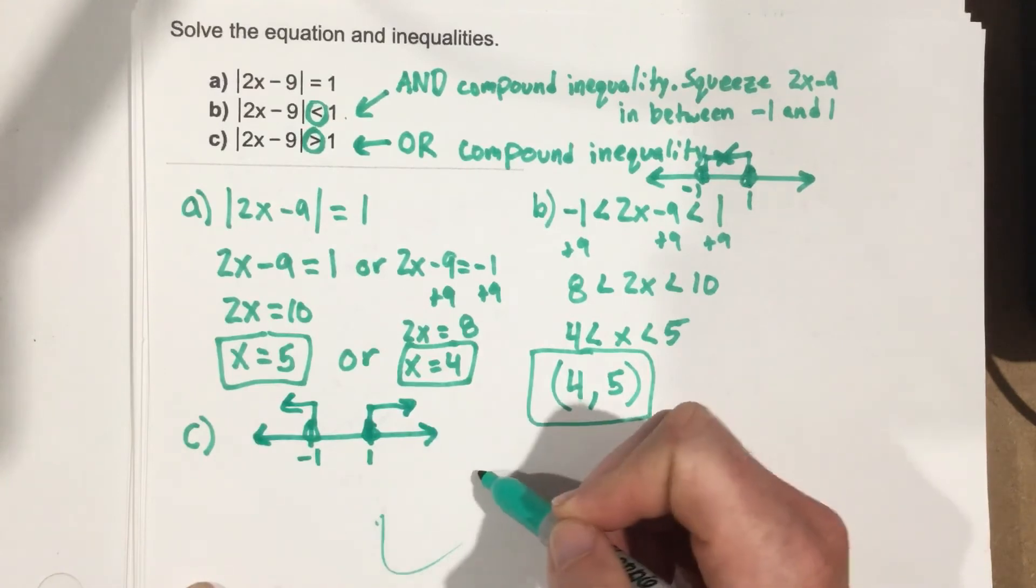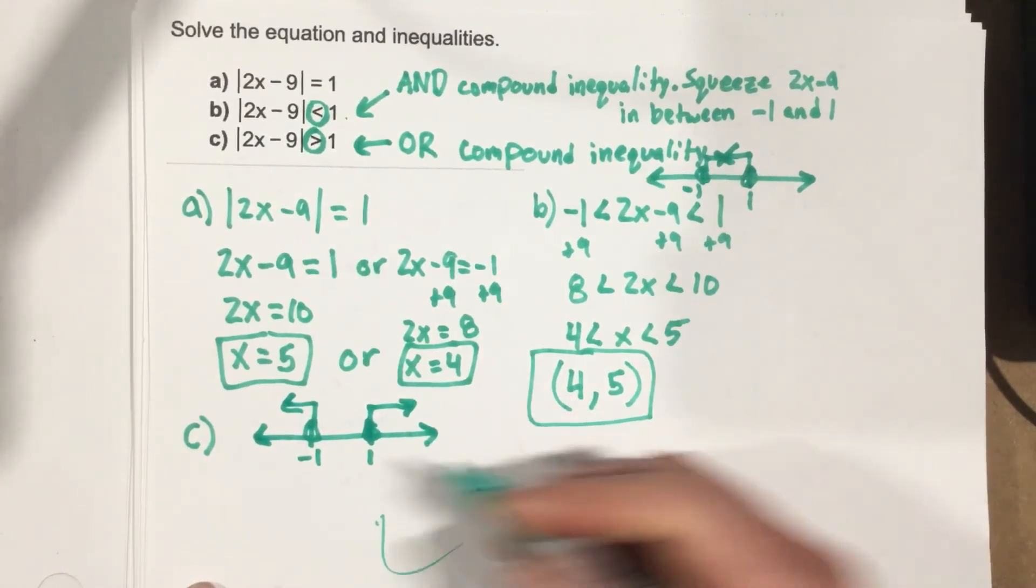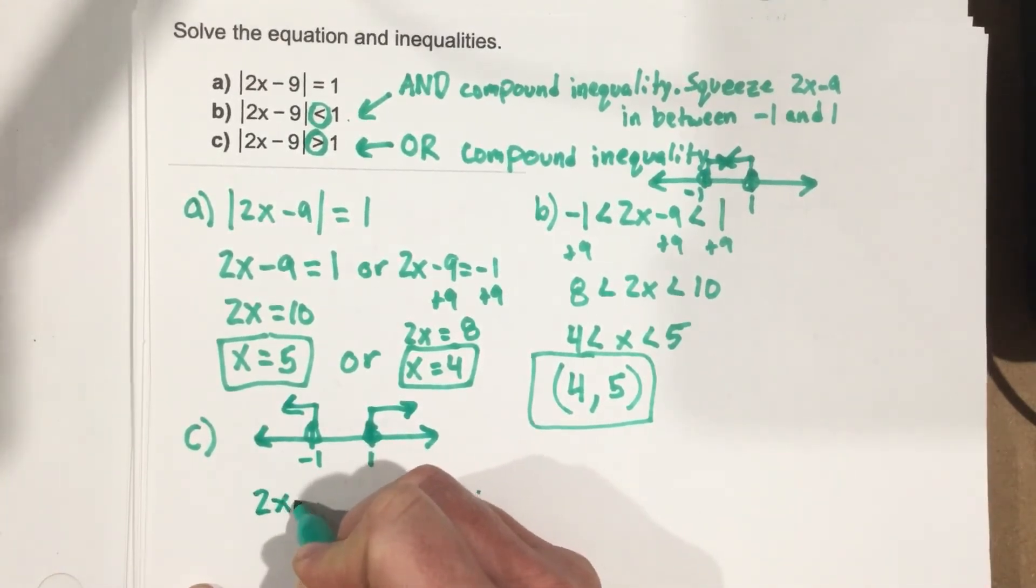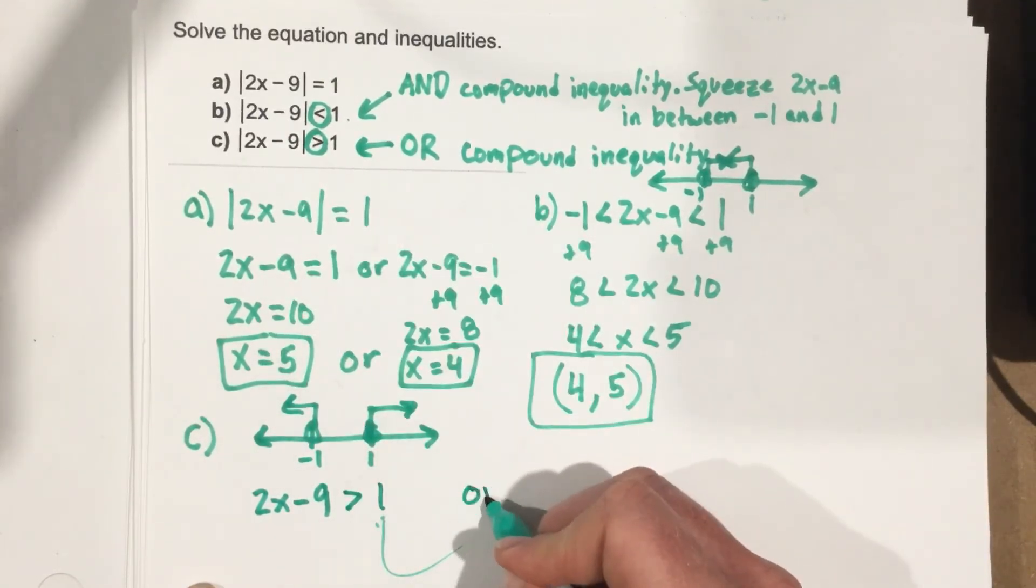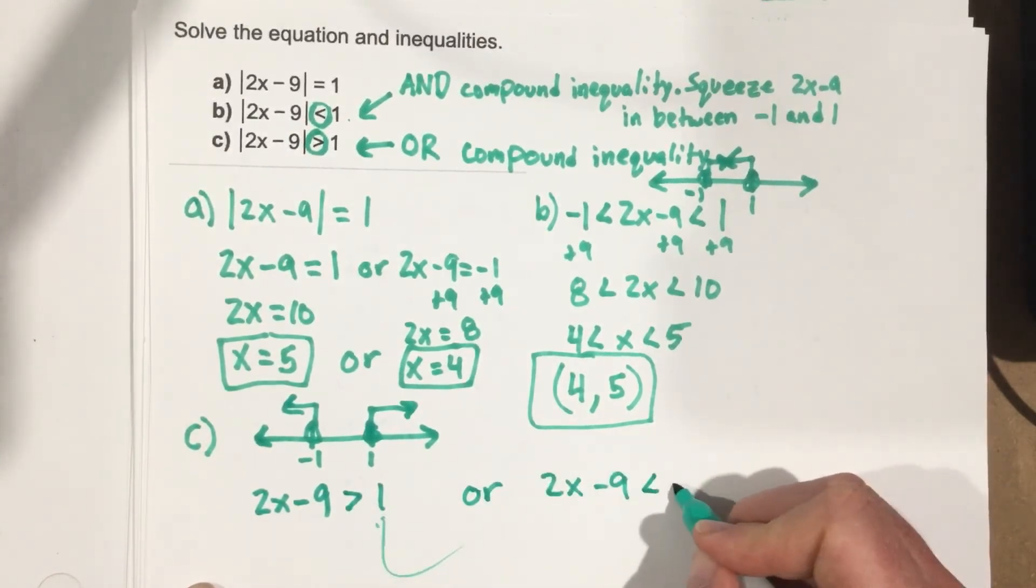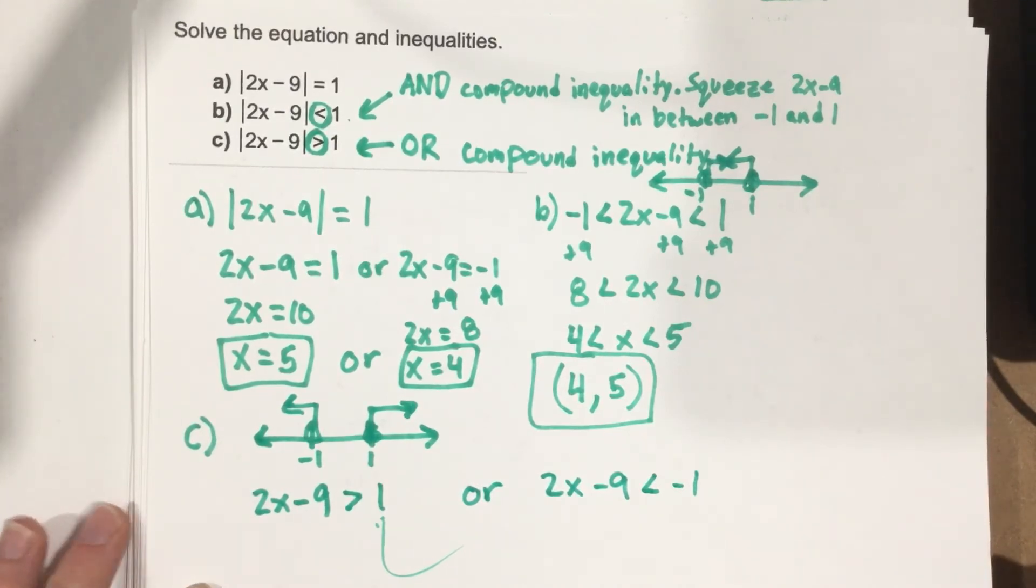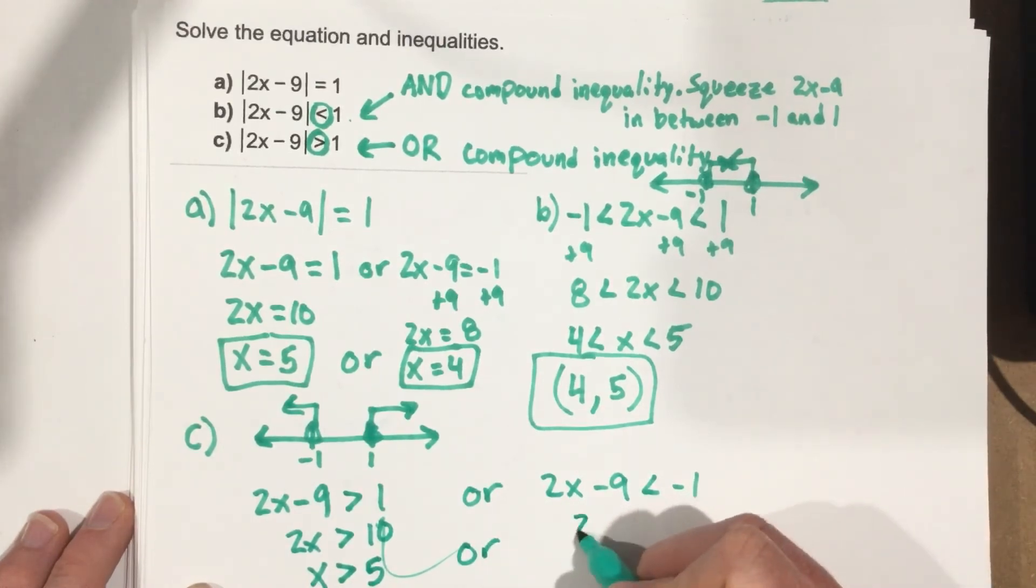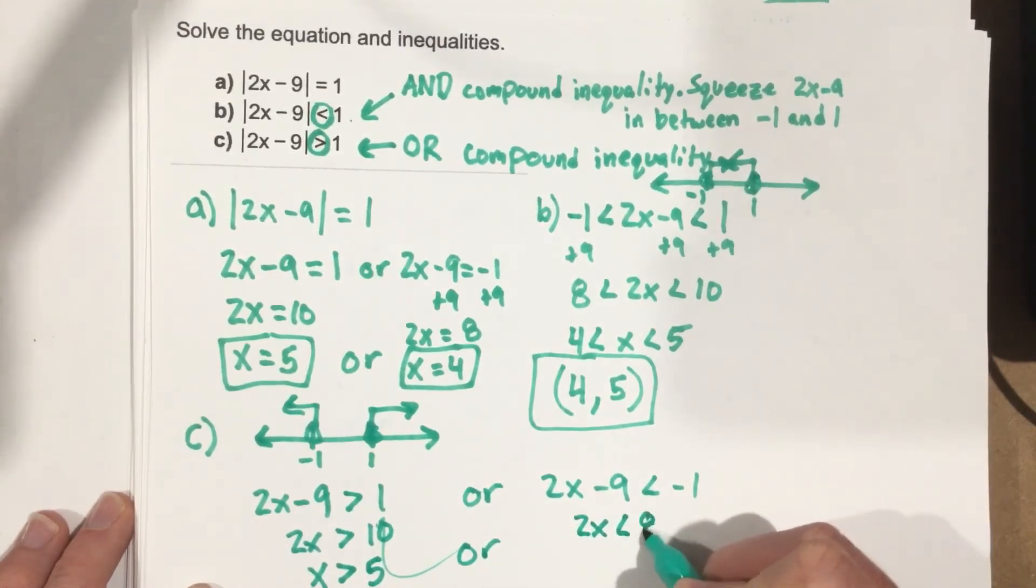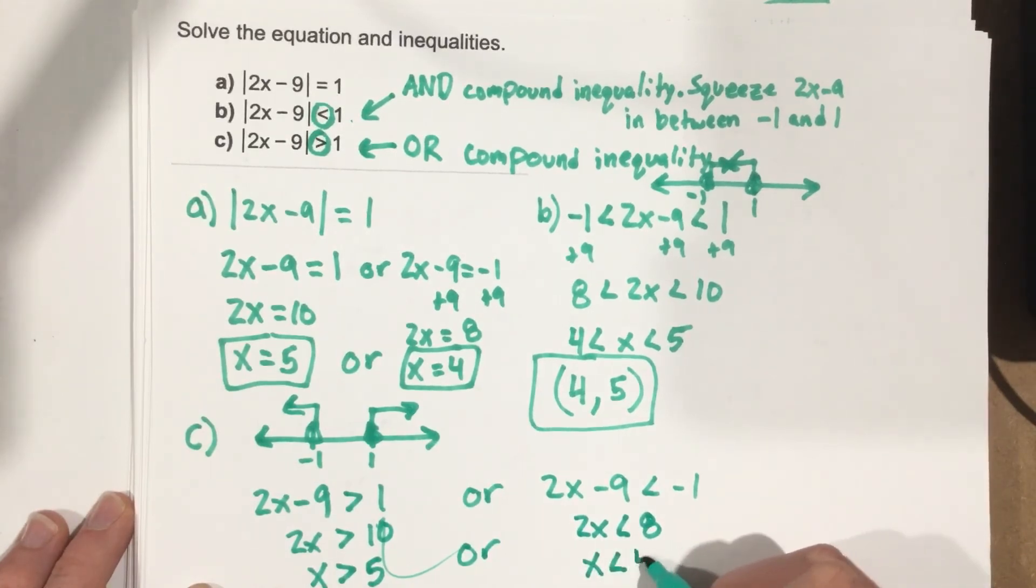So we're going to say 2x minus 9, just how it's written here, is greater than 1. Or 2x minus 9 is less than negative 1. So then we can add the 9 over, we get 2x greater than 10, divide by 2x is greater than 5. Or, add the 9 over, you get 2x less than 8, divide by 2x is less than 4.